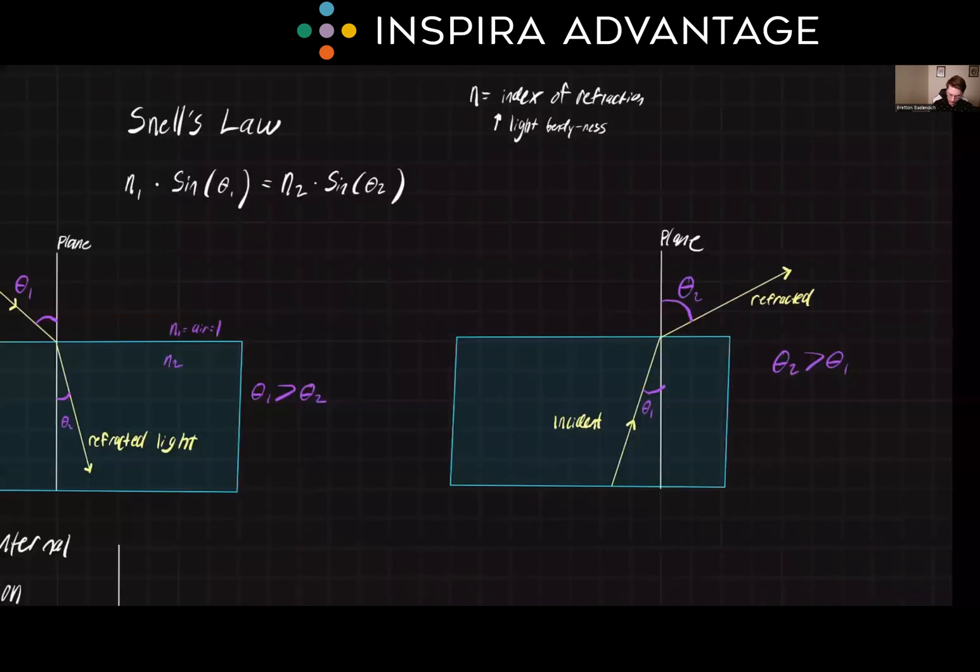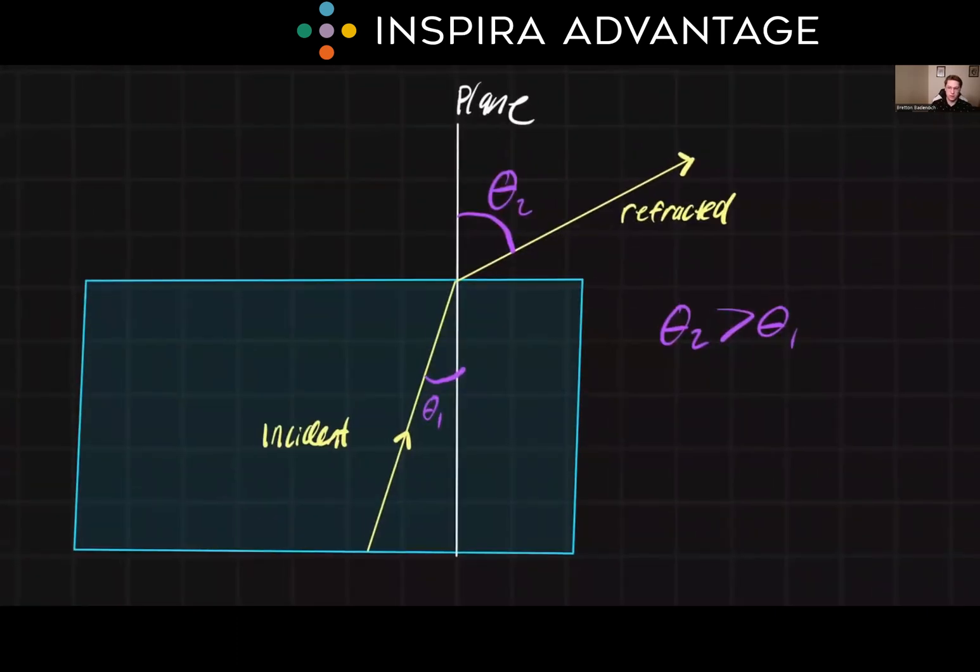Now let's see what this would look like if we're passing from a denser material into a less dense material. When light travels from a denser material, such as water, into a less dense medium, like air, the angle of refraction will be smaller than the angle of incidence.